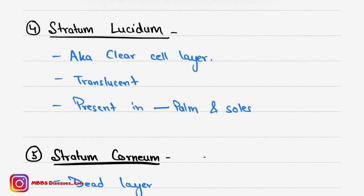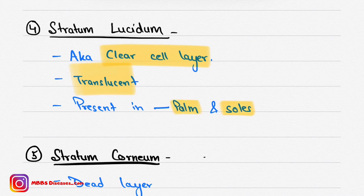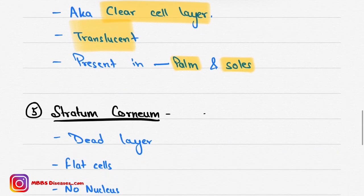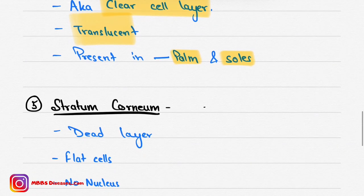The fourth layer is stratum lucidum, a special layer that is not present everywhere on the skin. It is also known as the clear cell layer because it appears translucent on microscopy. It is present only on the palms and soles.